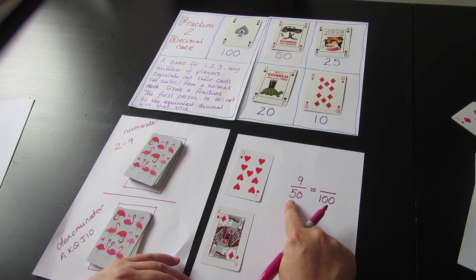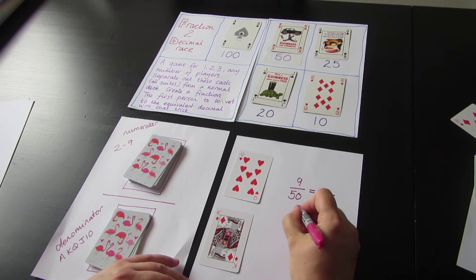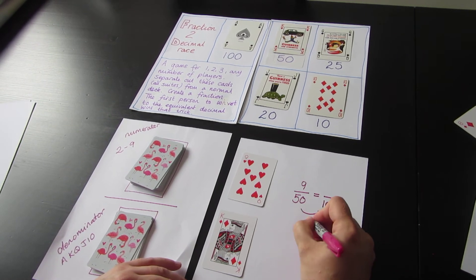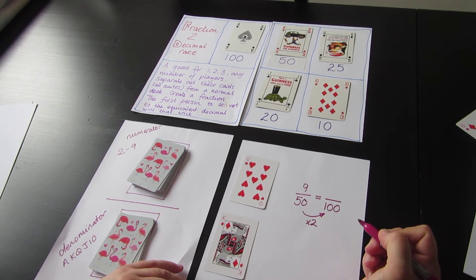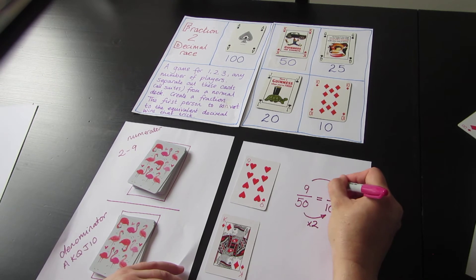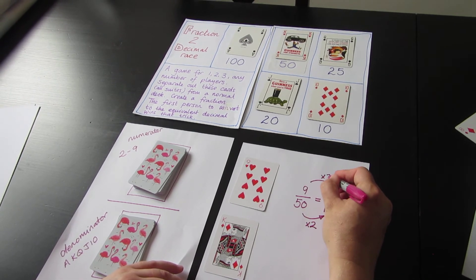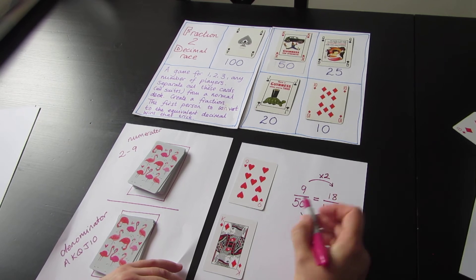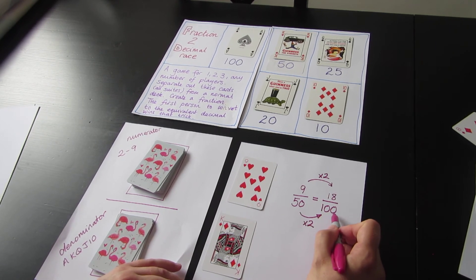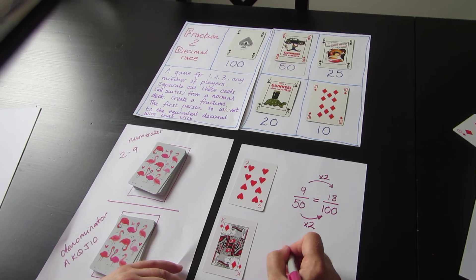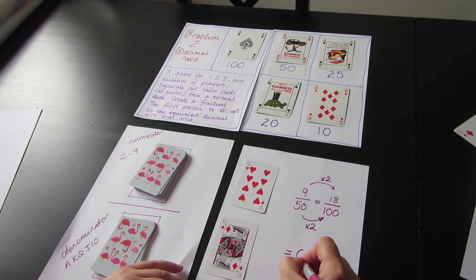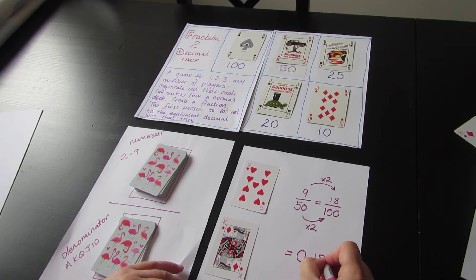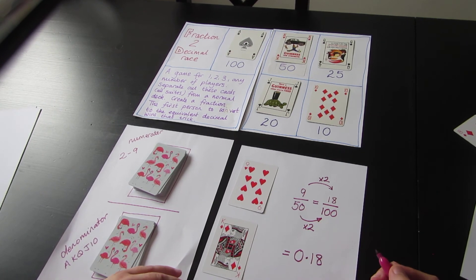I ask myself: what's the relationship between 50 and 100? I can see straight away it's times 2, or double. So I times the numerator by 2 also. Nine times 2 is 18. So 9/50 is equivalent to 18/100, which equals 0.18.